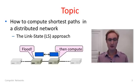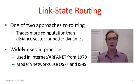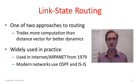Link state has a couple of phases. First, everyone floods the information, and then we compute the routes. It's interesting to compare link state routing with the distance vector approach because they operate quite differently. Distance vector spreads the work of computing routes across all nodes. In link state, we give everyone a copy of the topology and let everyone compute their own routes, replicating work rather than cooperating. Link state is closer to giving everyone a map of the network and letting them work out their own routes.